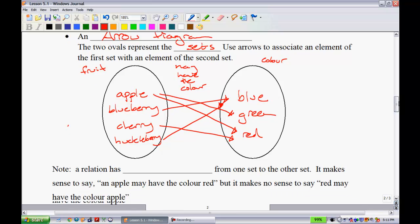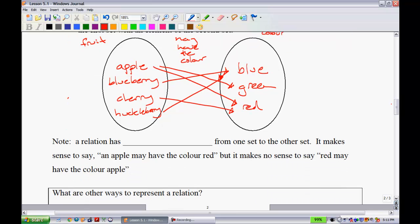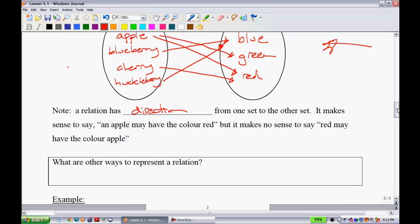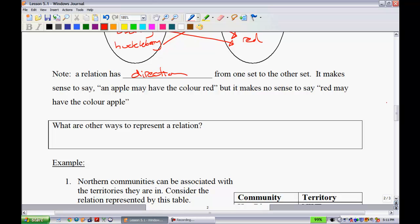For instance, according to the previous page, we have apples can be red and apples can be green. Blueberries are only blue. Cherries are only red. And huckleberries are blue. What we can say here is, I have a little note here. A relation has a direction from one set to the other set. It makes sense to say an apple may have the color red. But it doesn't make sense to go in this direction and say red may have the color apple. The question I had for you right here is, what are some other ways that we can represent a relation? This is something that we've done in past grades that we may not look at right now. But there are other ways that you can do this.